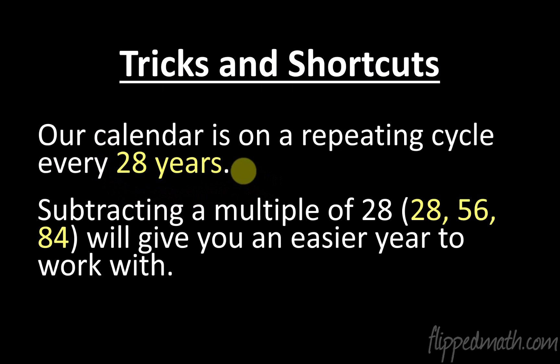So if you subtract a multiple of 28, then you get a smaller year to work with. So 28, 56, 84. Those three numbers, 28, 56, 84, are crucial to help us work with easier years. All right. So let me show you what I'm talking about.